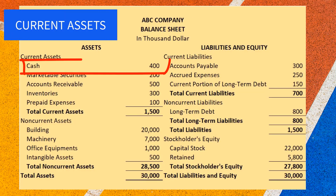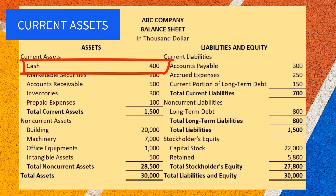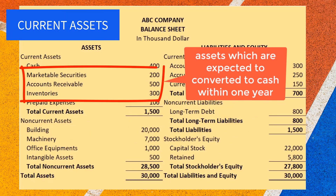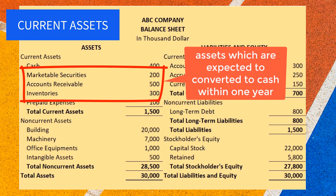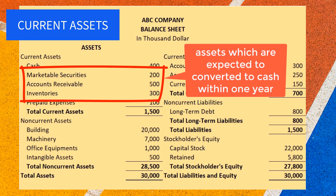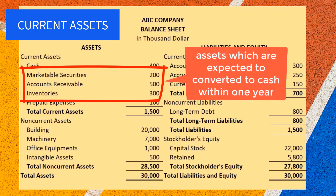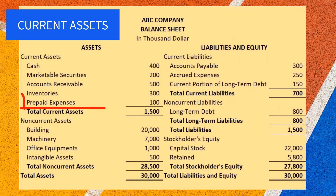Current assets include cash and other assets which are expected to be converted to cash within one year, such as marketable securities, accounts receivable, and inventories. Current assets also include prepayments such as prepaid rent and prepaid insurance.